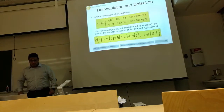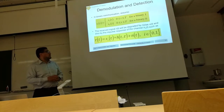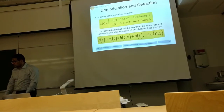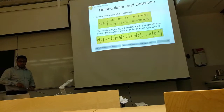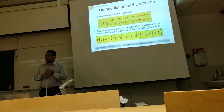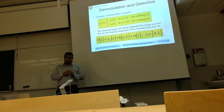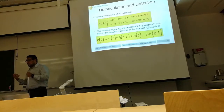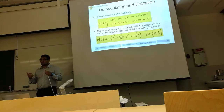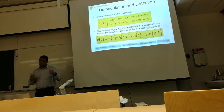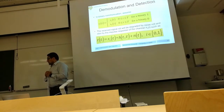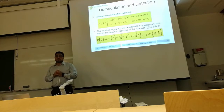Good afternoon. Today we continue our lesson about detection and visual communication. In the last lecture we mentioned the representation of a signal as a vector. We said that representing signals as vectors makes detection easier because then we can measure the distance between the received signal and the possible transmitted symbols, since every symbol can be represented as a vector.